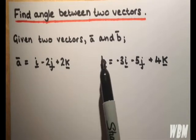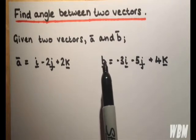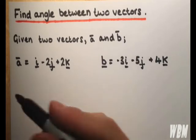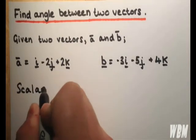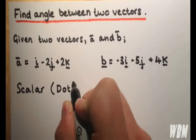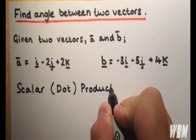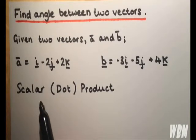To find the angle between two vectors we use something known as the scalar product. It's also known as the dot product, and we refer to it as this because the value that we get is in a scalar form.